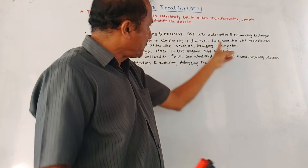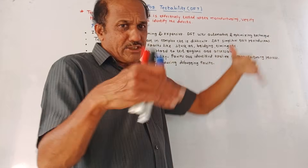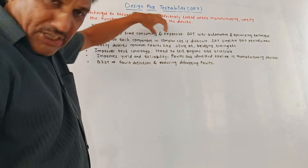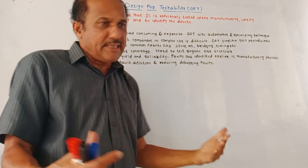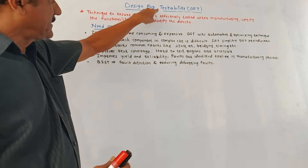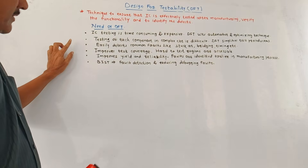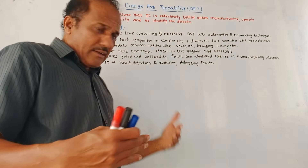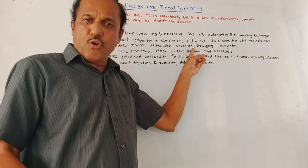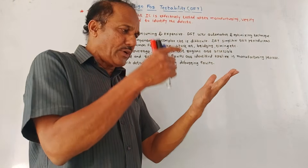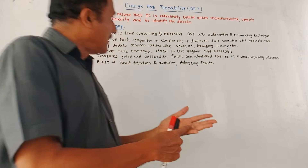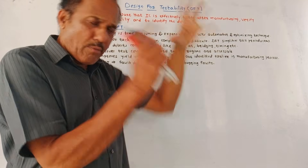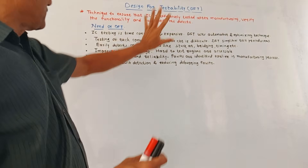We will discuss it in detail and this point will be more clear. DFT makes use of certain automated techniques, so testing each component in a complex circuit becomes easy. It basically detects common faults very easily. Common faults include stuck-at faults — stuck at zero or stuck at one — as well as bridging faults or timing faults like delay time. Such common faults can be easily detected using this method, without following the lengthy procedure of traditional methods.